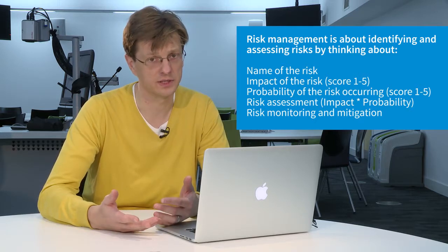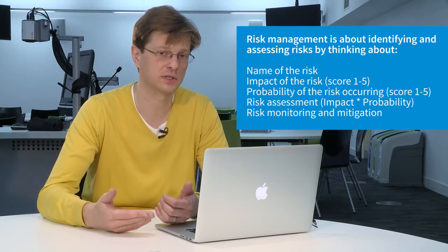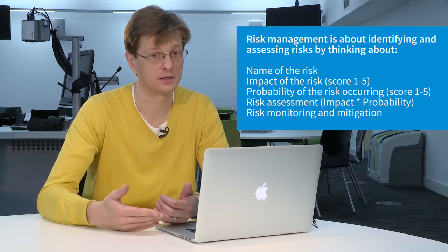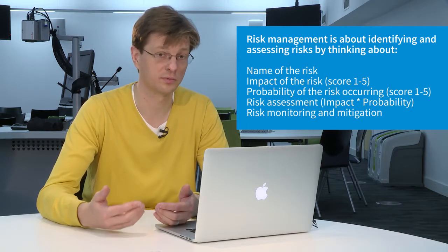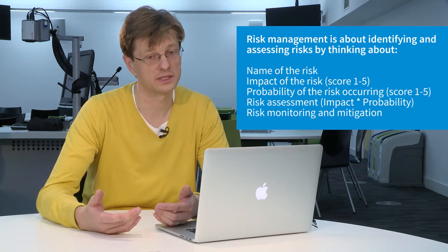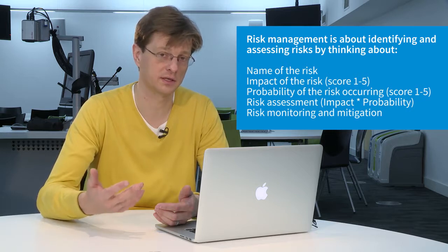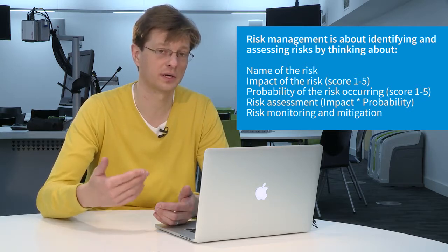There are usually five columns in the risk management table. The first is the name of the risk, the second is the impact that risk would have, the third would be the probability of that risk to occur, and the fourth column would be the assessment of the risk. So you could quantify by multiplying the severity of the risk by the probability of that risk to occur.